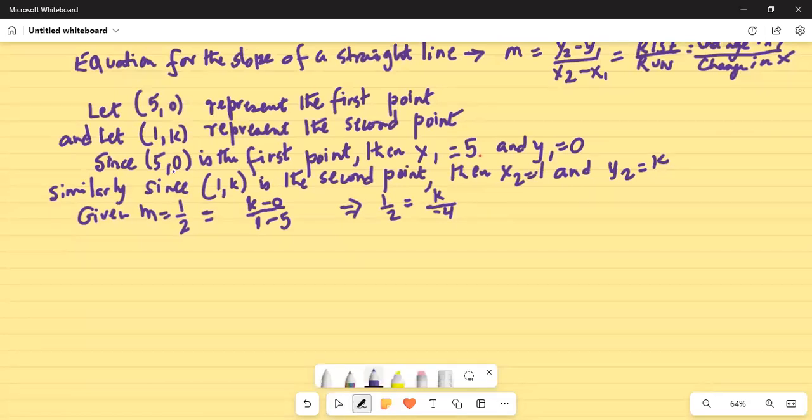Now we will do cross multiplication. So half is equal to k over minus 4. Cross multiplication means minus 4 gets multiplied by 1 and 2 gets multiplied by k. Don't forget the equal sign between them is 2 times k.